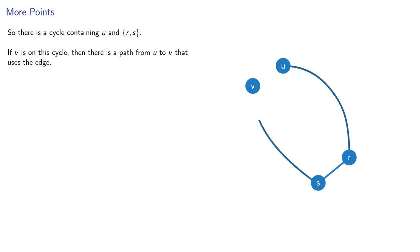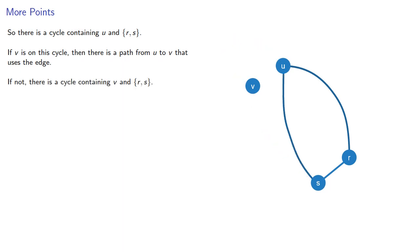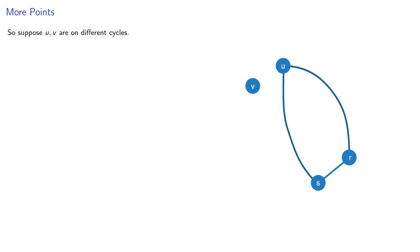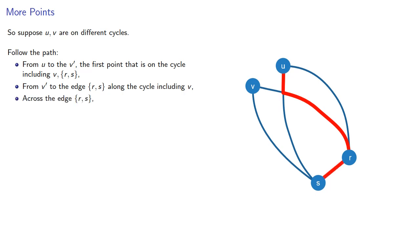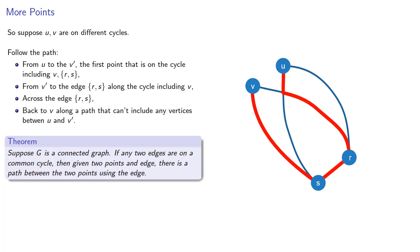If v is on this cycle, then there's a path from u to v that uses the edge. And if not, there's a cycle containing v and the edge rs, and if u is on this cycle we can find a path that uses the edge. So suppose u and v are on different cycles. We can follow the path from u to v', the first point on the cycle that includes v and the edge rs, from v' to the edge along the cycle including v, across the edge, and then back to v along the path. And so suppose g is a connected graph: if any two edges are on a common cycle, then given two points and an edge, there is a path between the two points using the edge.